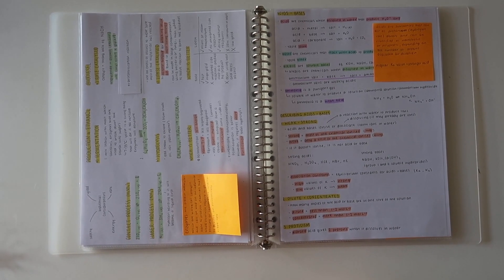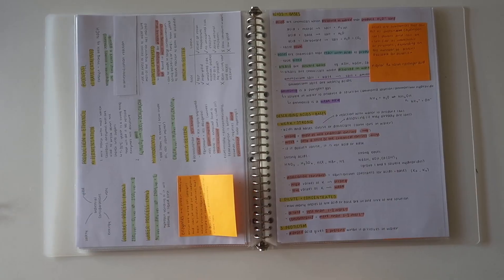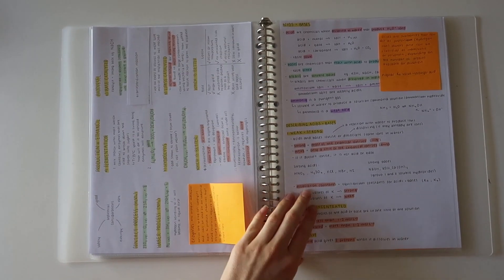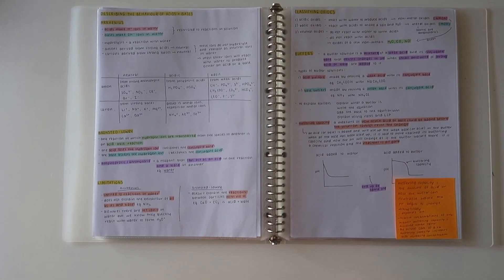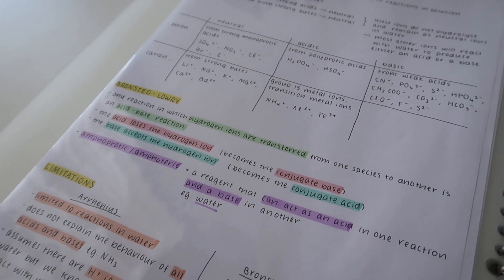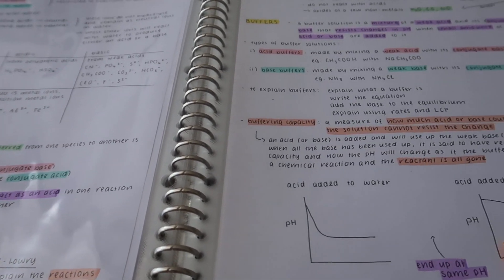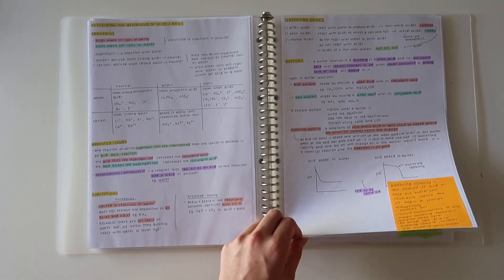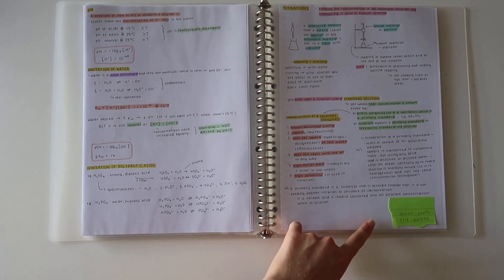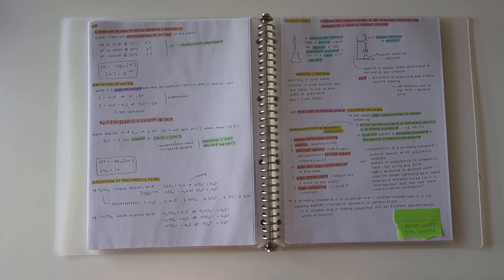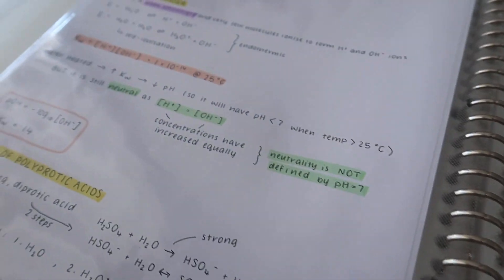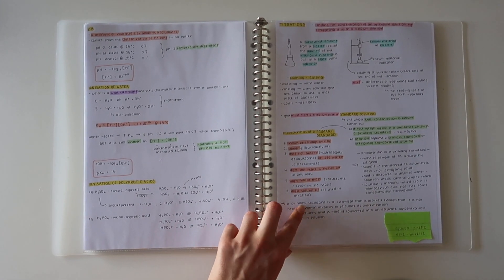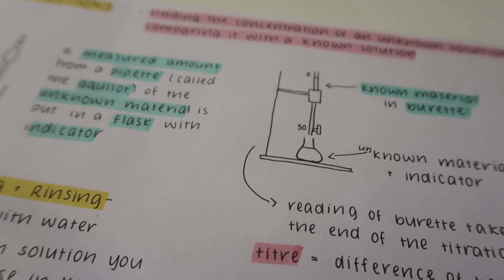Then we move on to acids and bases. I went back to using my Stabilo Boss pastel highlighters for this topic and the next one, because they don't smudge as much as the Mildliners. I'm not really a fan of these notes to be honest, but I did try to keep them condensed — probably could have been a bit more condensed. There are graphs, a table, and even small visual details that help make the information stand out. I've still got post-it notes going — adding important information that wasn't already there is really crucial so you're not stuck in the exam. And there's my little diagram of a titration.